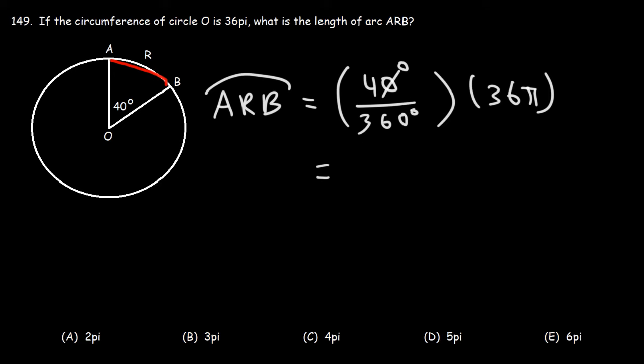So let's simplify the fraction 40 over 360. We can cancel a 0, so this becomes 4 over 36. 4 is 4 times 1, and 36 is 4 times 9. So this portion of the circle is one-ninth of the entire circle. So thus, this arc should be one-ninth of the circumference of the circle.